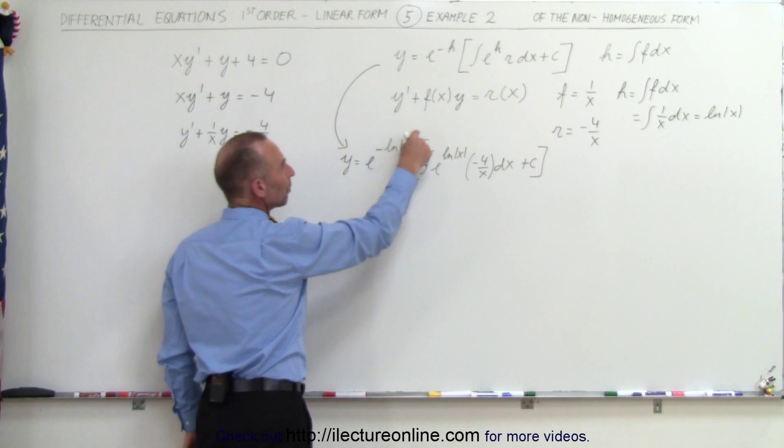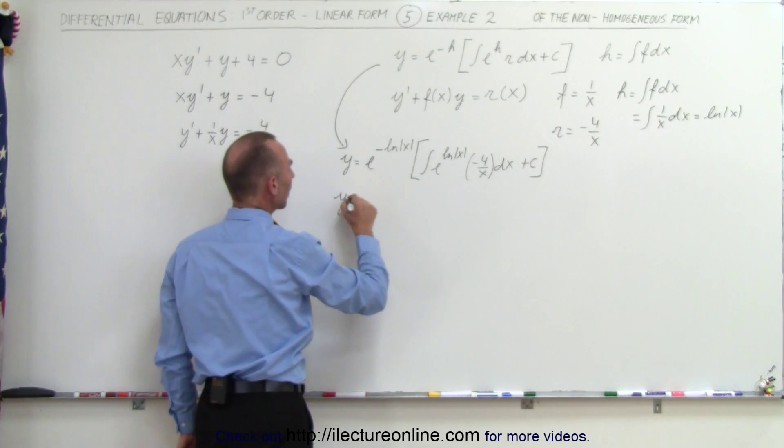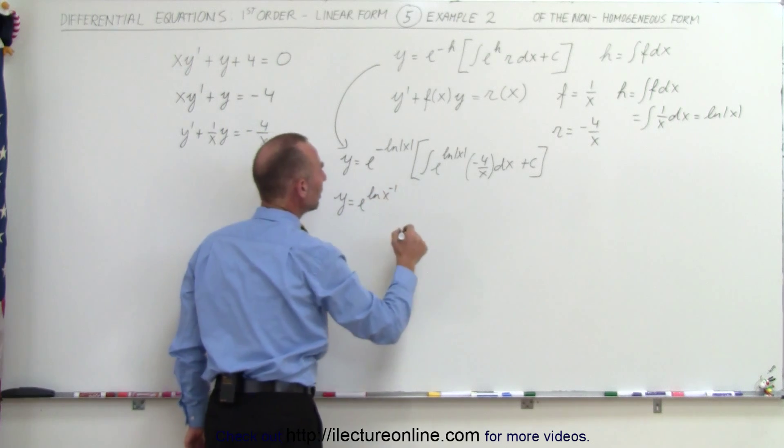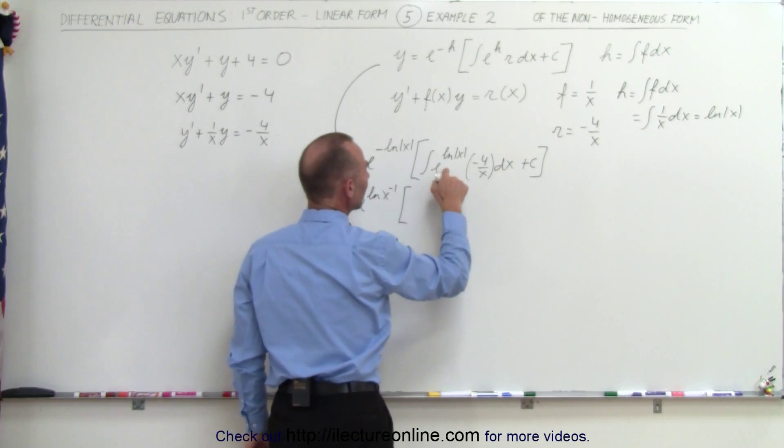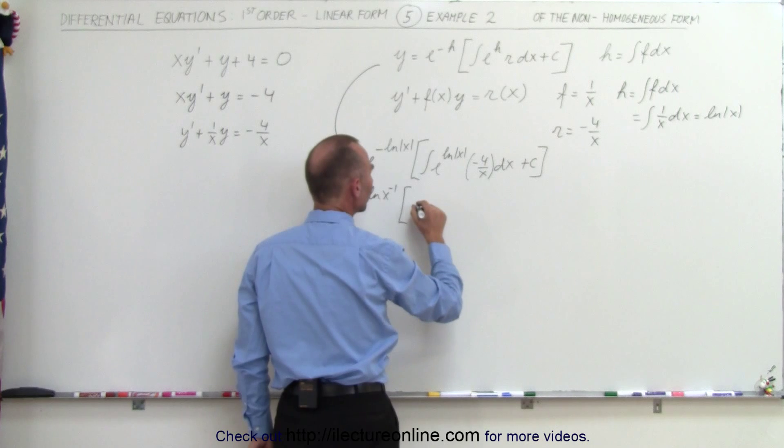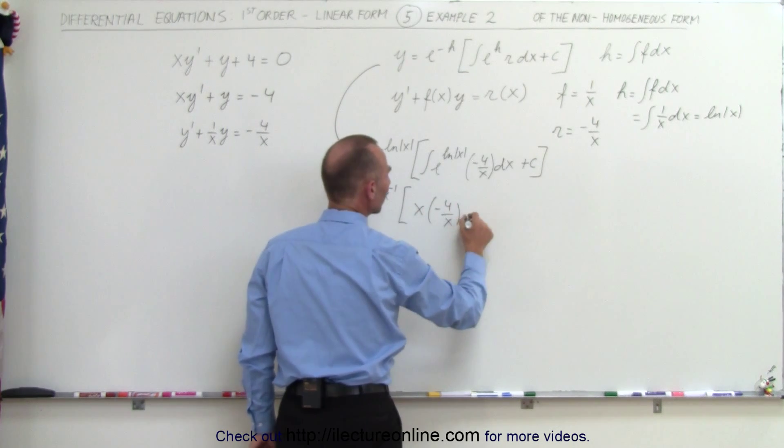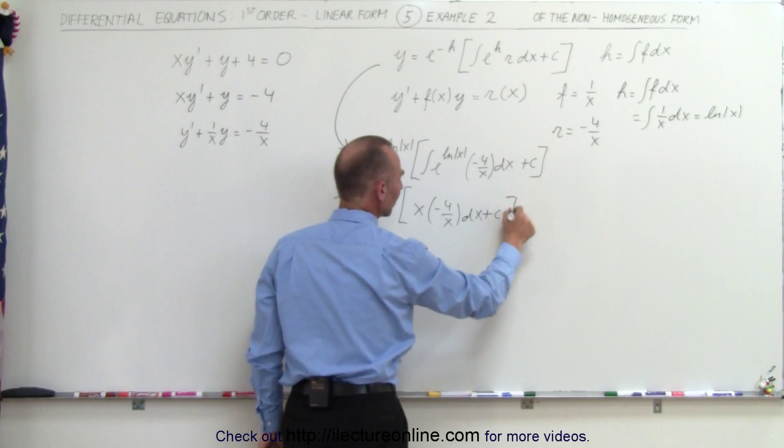Okay, we can take the negative and plug it up here, so we say that y is equal to e to the natural log of x to the minus 1, times e to the natural log of x is simply equal to x, times minus 4 over x dx, plus a constant of integration.